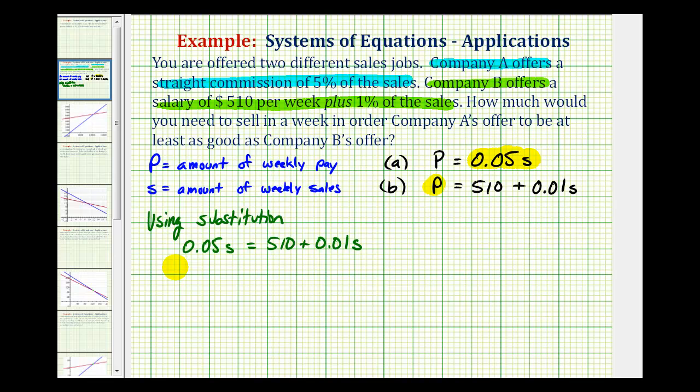And now we need to solve for S. But notice how this equation does contain decimals. So if we multiply both sides of the equation by 100, we could eliminate the decimals. And since we're going to solve this by hand, let's go ahead and do that.